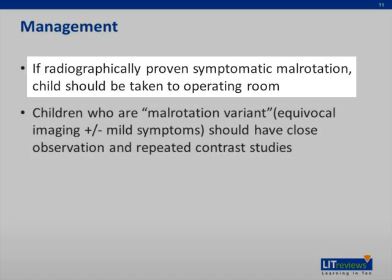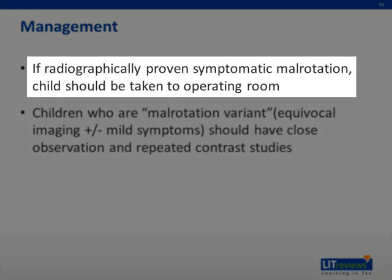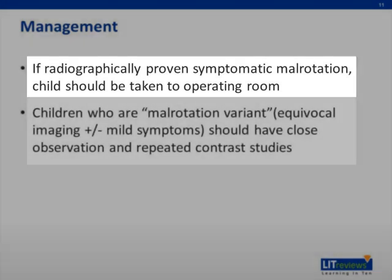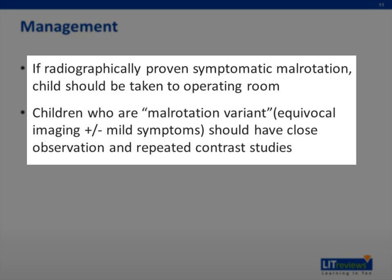If a child has radiographically proven symptomatic malrotation, they should be taken urgently to the operating room. Children who are a malrotation variant, i.e., have equivocal imaging, with or without mild symptoms should have close observation and repeated contrast studies.